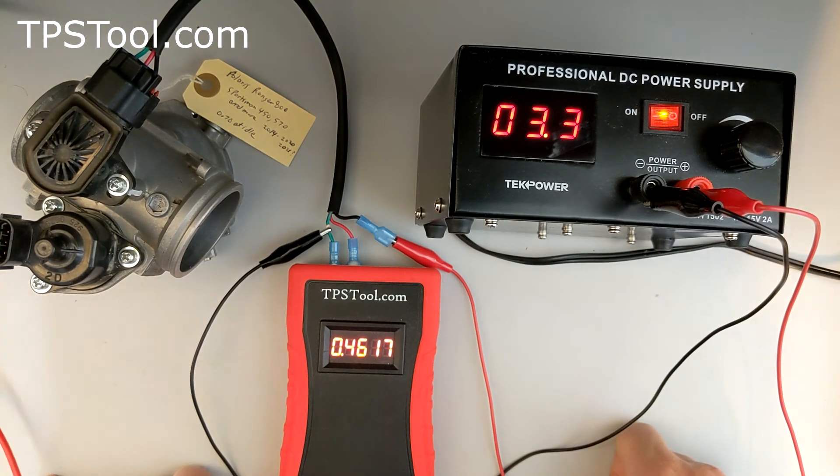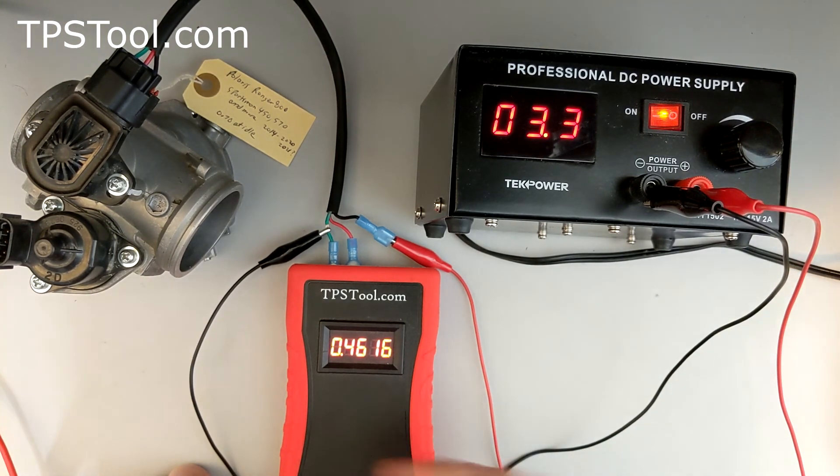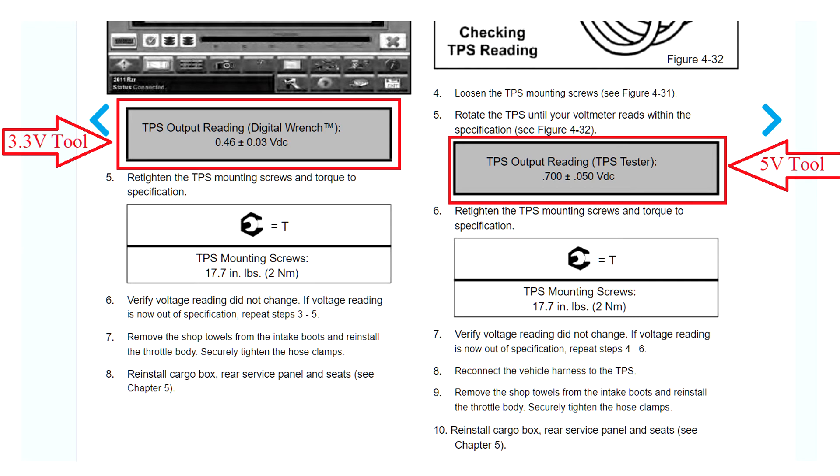So, once more, to answer the question, which one is correct? If you're using this tool here, 0.7 is correct. If you're using this tool with a 5 volt supply, 0.7 is correct. If you're using the Polaris digital wrench tool, then 0.46 is correct. I hope this helps. If you have questions, please post them in the comments below. Send me an email. Let me know if you have other questions I can answer, and I'm more than happy to help you out. Thanks a lot.